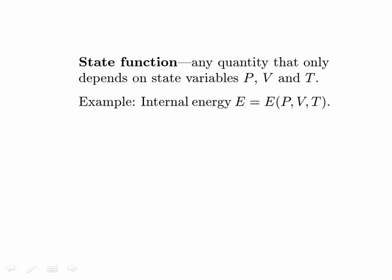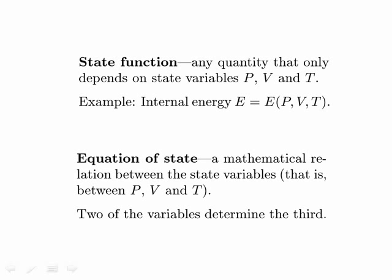The second concept is the equation of state — a mathematical relationship between the state variables P, V, and T. This relationship expresses the internal physics of the system, and has the consequence that two of these variables determine the third, so there are only two independent variables. The equation of state might be purely empirical, but ultimately we'd like a microscopic explanation involving what the atoms composing the system are actually doing.